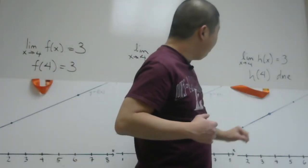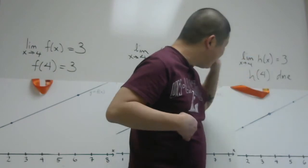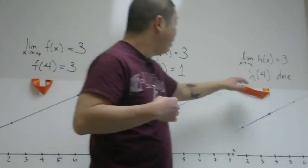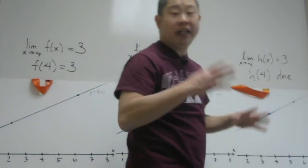And the exact y-value when x is exactly equal to 4, that notation is h of 4. What about h of 4? There is no y-value. So h of 4, DNE, does not exist.